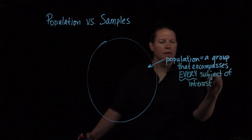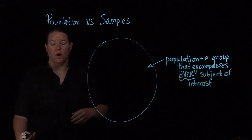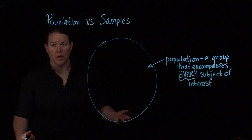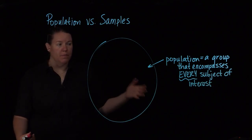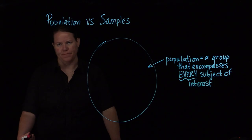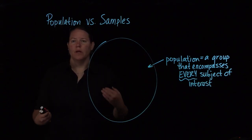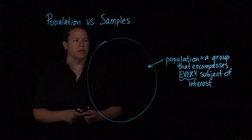If you're doing a study on males over 40 in the United States, then the population would be every single male in the United States that's over 40. It's a big group. So that's part of the problem that we're dealing with in statistics.